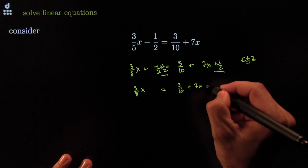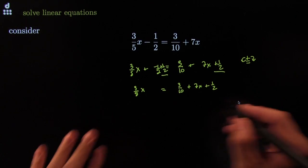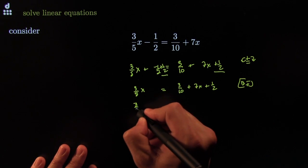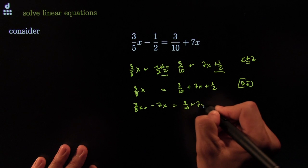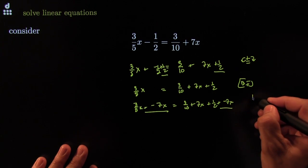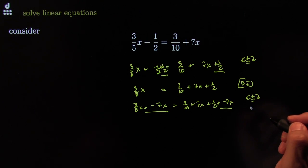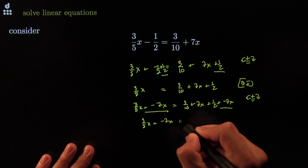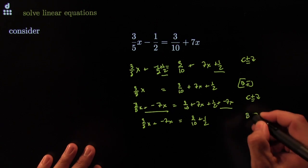That gets me to: three-fifths x equals three-tenths plus 7x plus one-half. Now I've got to get rid of the 7x — I'm trying to move all x's to one side — so I add negative 7x to both sides. That's the cancellation law of addition. This cancels the 7x on the right and gives me: three-fifths x plus negative 7x equals three-tenths plus one-half.